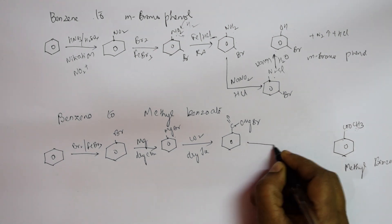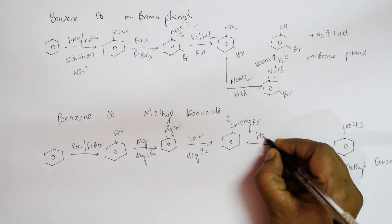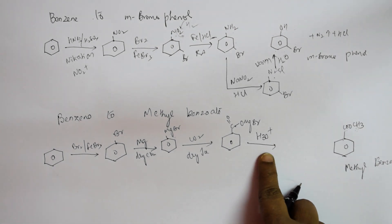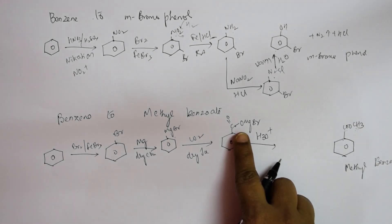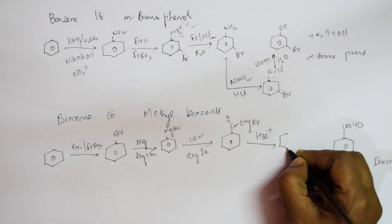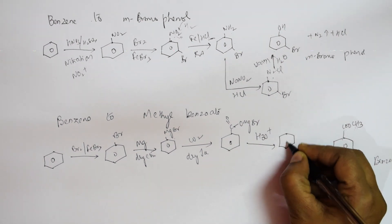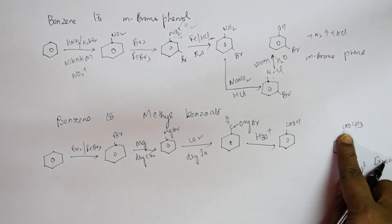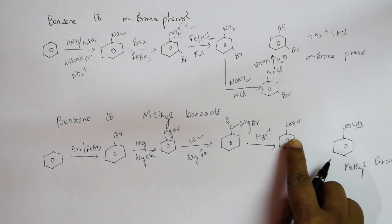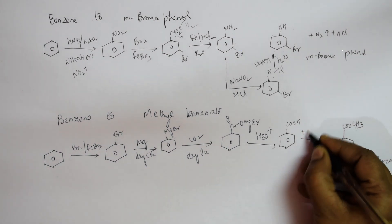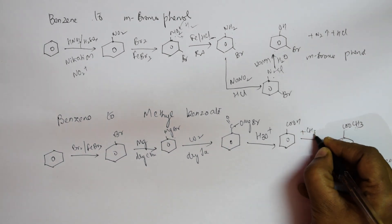Adding H3O+ in acidic medium converts the intermediate into COOH (benzoic acid). Now I can do esterification — esterification is a combination of acid plus alcohol. So I add CH3OH to perform the esterification.